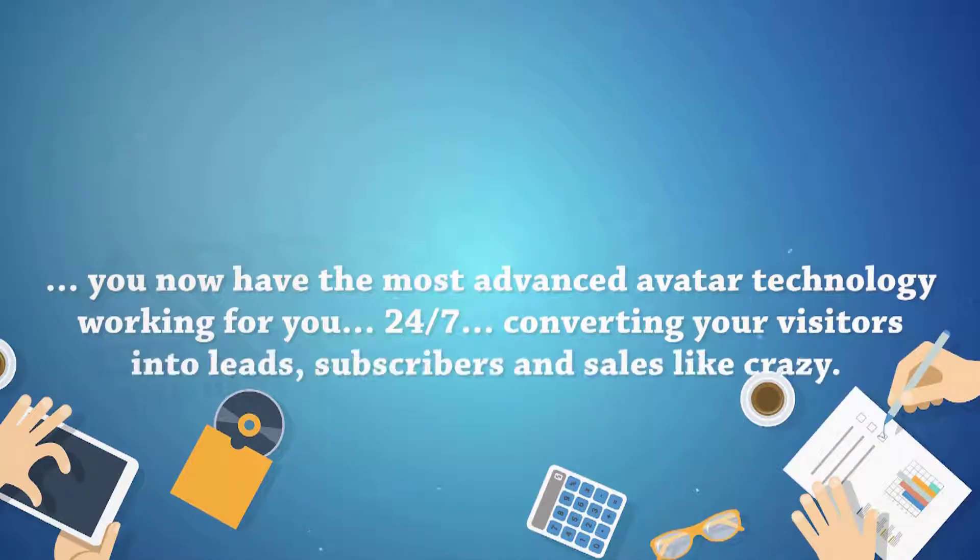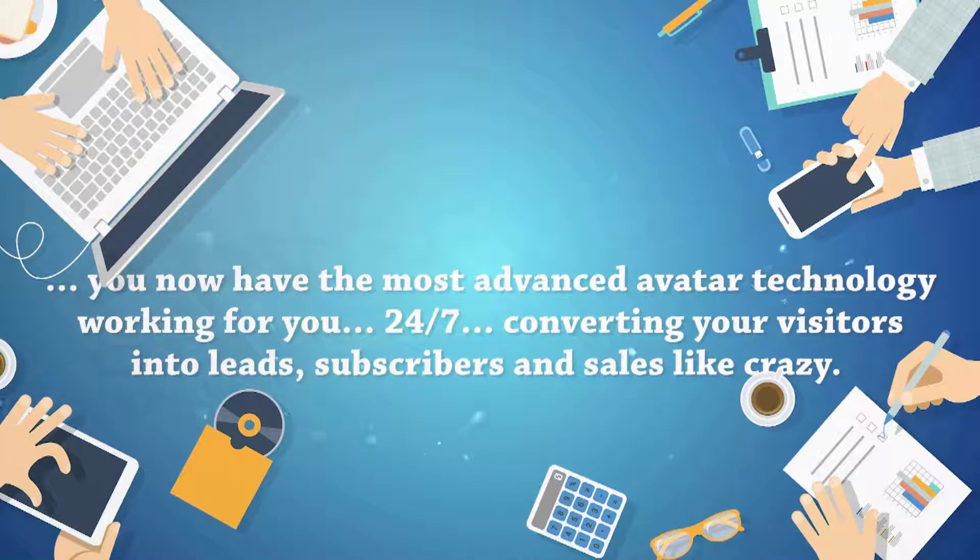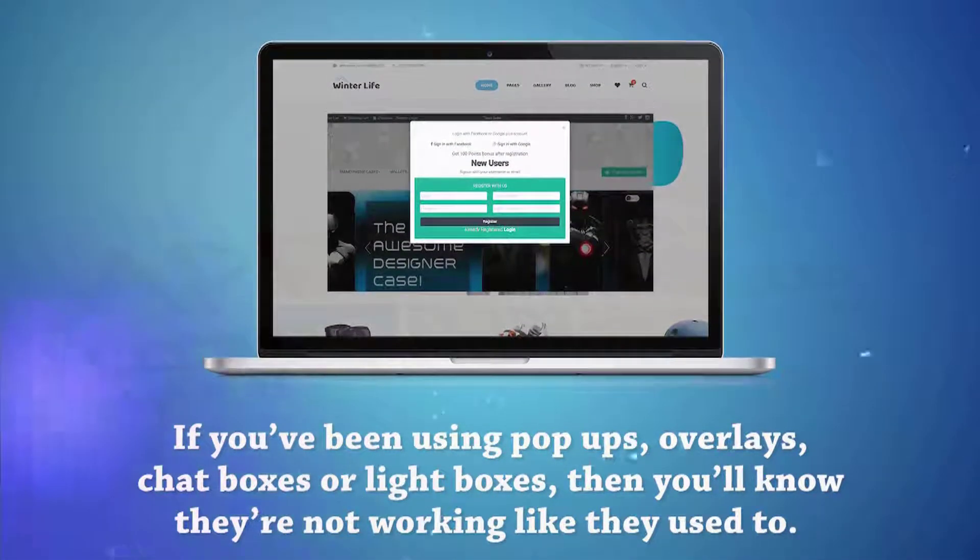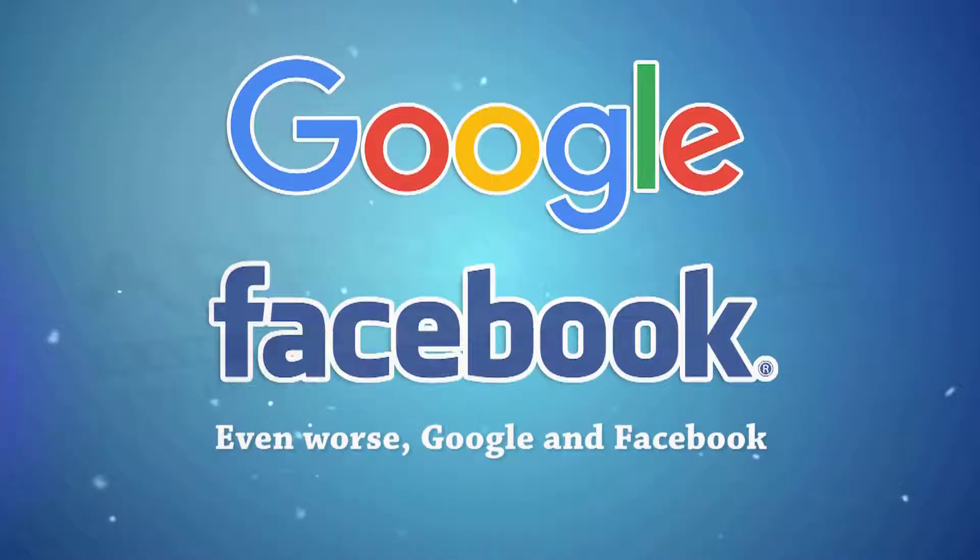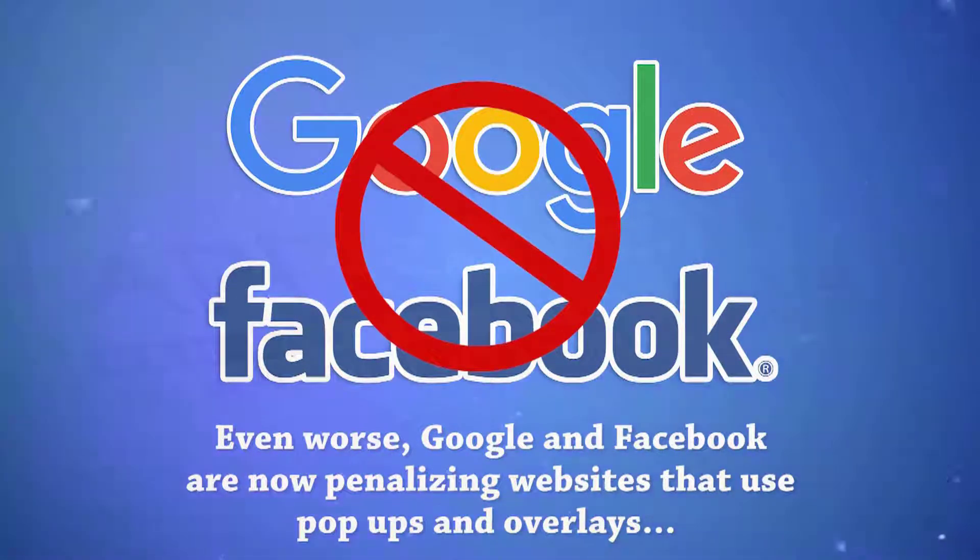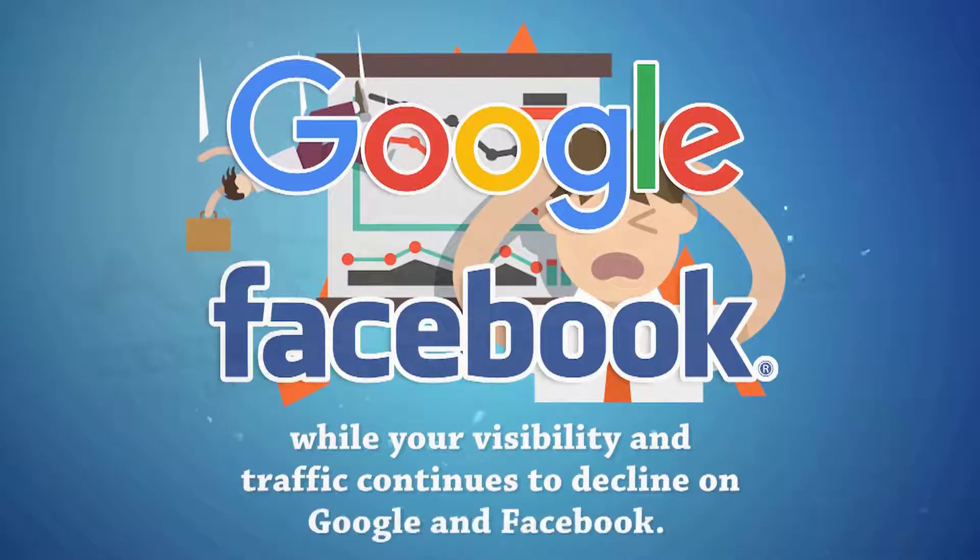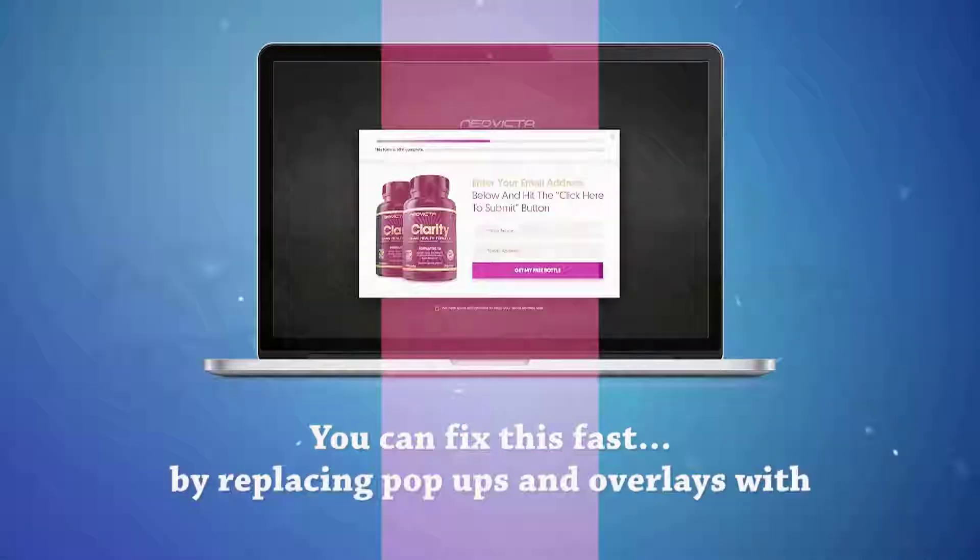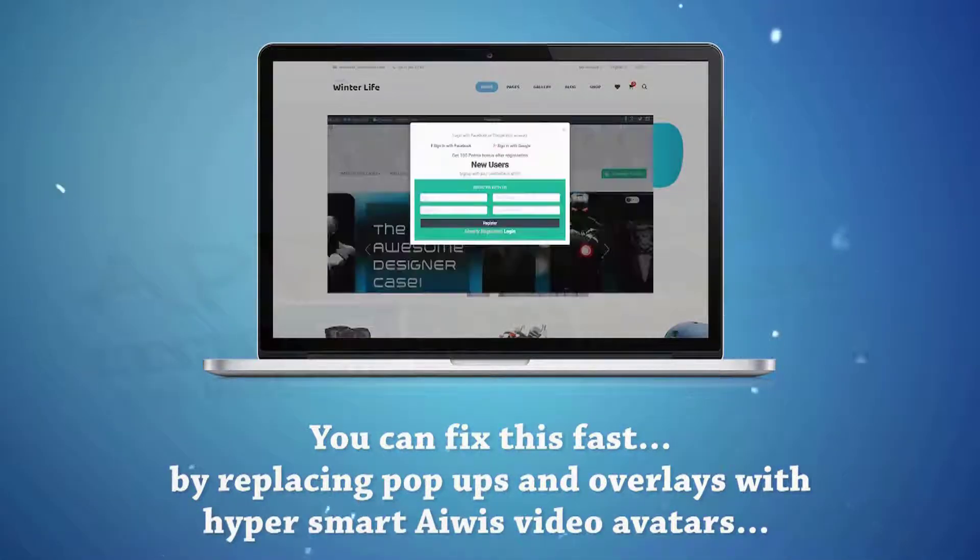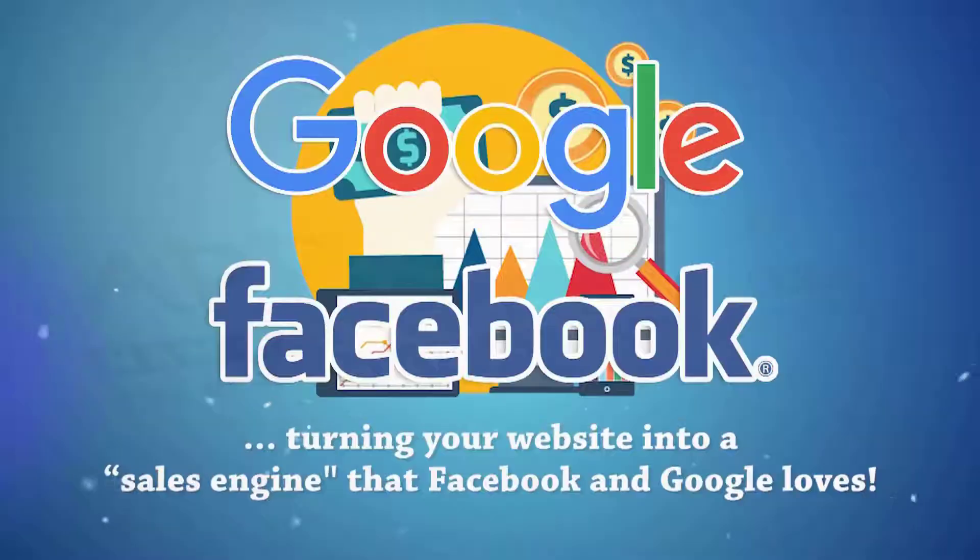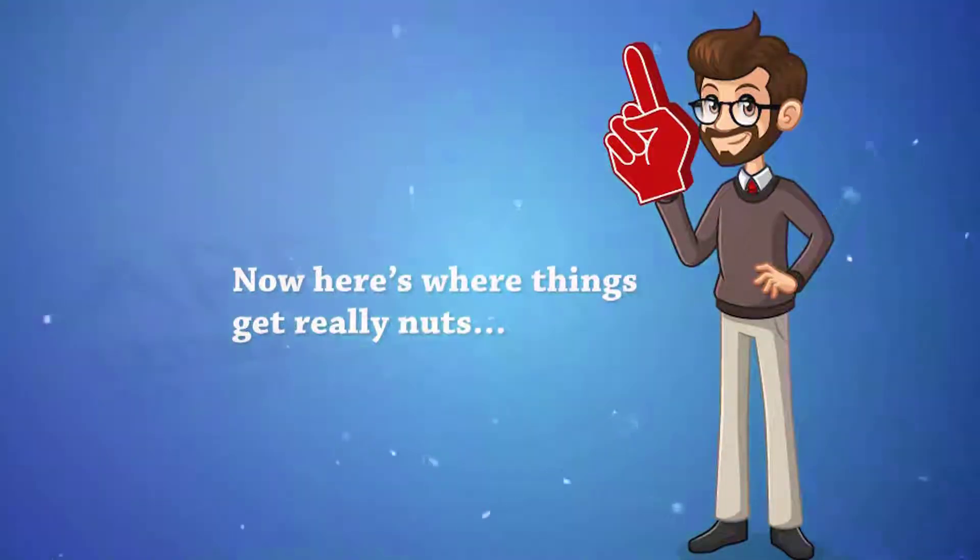24/7, converting your visitors into leads, subscribers, and sales like crazy. If you've been using pop-ups, overlays, chat boxes, or light boxes, then you'll know they're not working like they used to. Even worse, Google and Facebook are now penalizing websites that use pop-ups and overlays. If you're using this outdated technology, you could be paying more per click than your competitors, while your visibility and traffic continues to decline on Google and Facebook. You can fix this fast by replacing pop-ups and overlays with hyper-smart AWS video avatars, turning your website into a sales engine that Facebook and Google loves. Now, here's where things get really nuts.